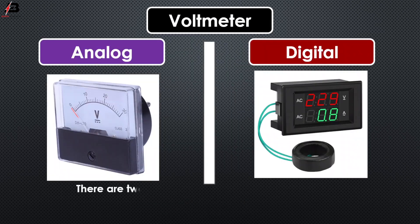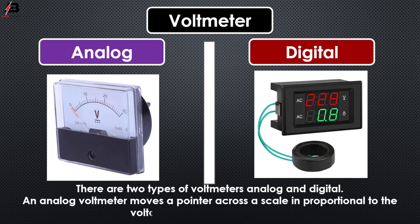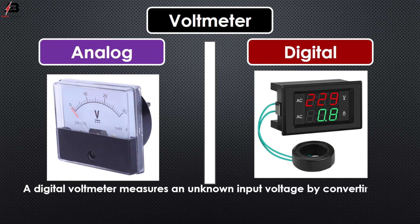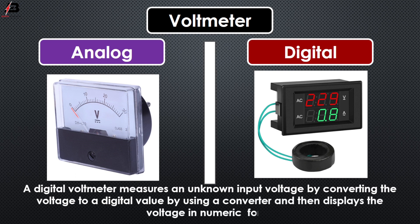There are two types of voltmeters: analog and digital. An analog voltmeter moves a pointer across a scale in proportion to the voltage of the electrical circuit. A digital voltmeter measures an unknown input voltage by converting the voltage to a digital value using a converter and then displays the voltage in numeric form.